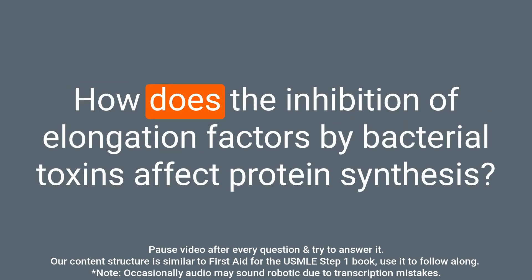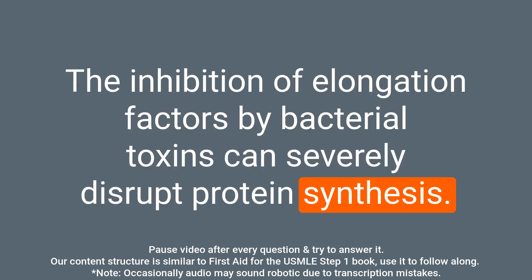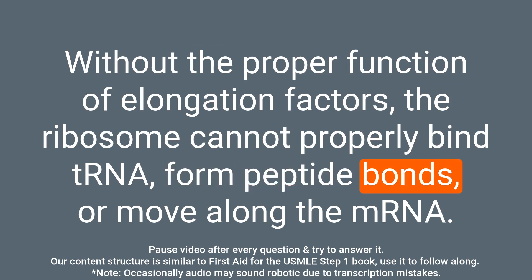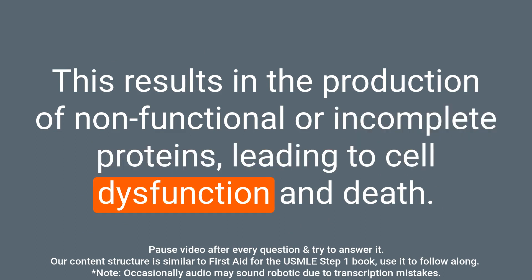Question: How does the inhibition of elongation factors by bacterial toxins affect protein synthesis? Answer: The inhibition of elongation factors by bacterial toxins can severely disrupt protein synthesis. Without the proper function of elongation factors, the ribosome cannot properly bind tRNA, form peptide bonds, or move along the mRNA. This results in the production of non-functional or incomplete proteins, leading to cell dysfunction and death.